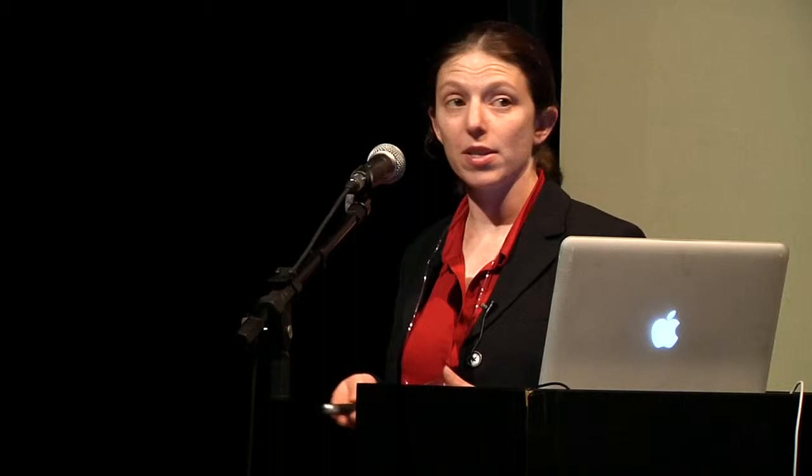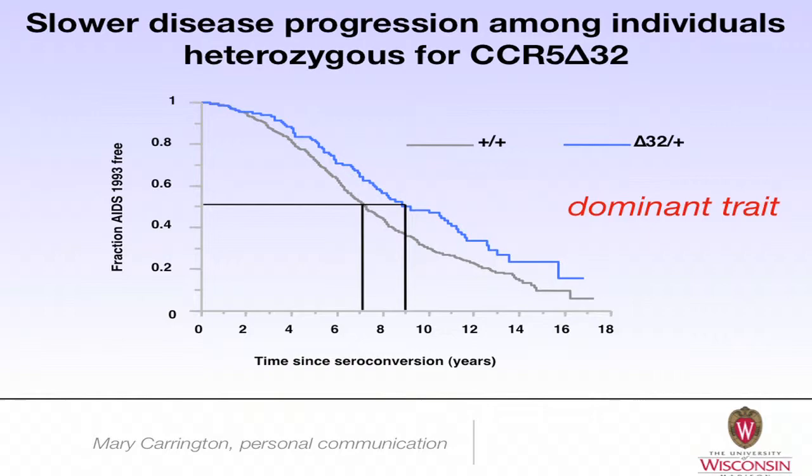One may ask whether there is any relationship with CCR5 delta 32 heterozygosity and disease course. It doesn't seem to affect disease susceptibility, but does it affect disease course? On the y-axis you see the fraction who are AIDS-free and the time since seroconversion. Those who are heterozygous for the delta 32 mutation progress to disease more slowly than those with the wild-type CCR5 gene, and this is evidence that this is a dominant trait.